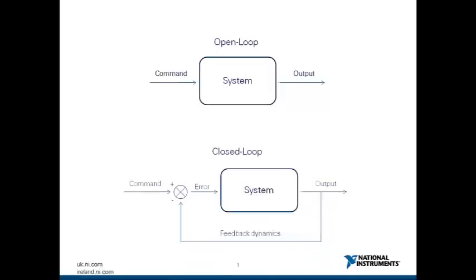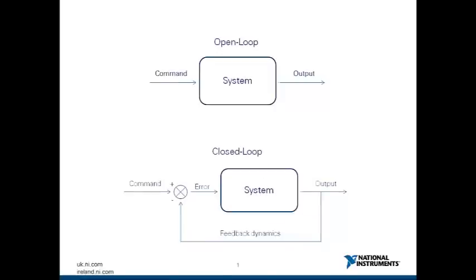Closed loop systems on the other hand incorporate feedback and therefore improve accuracy with the ability to compensate for any unknown disturbances. The downside to this is that they often require additional attention during the planning stage to ensure that the system remains stable.